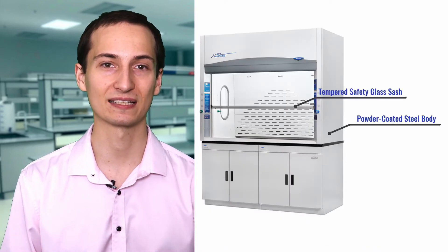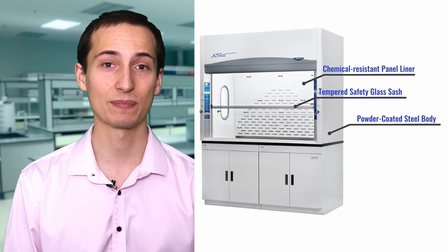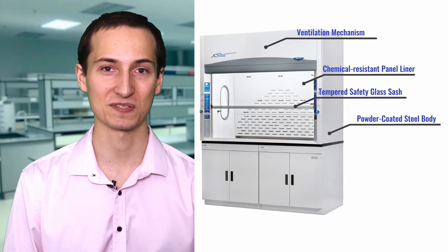Now let's discuss the construction materials. Typical fume hoods have powder-coated steel bodies, tempered safety glass sashes, chemical-resistant panel liners, and ventilation mechanisms. Depending on the kind of work being done, you may need specific countertop and liner materials.